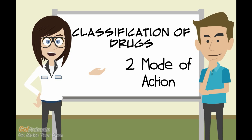The second way of classifying drugs is by their mode of action. There are three types of drug mode of actions: etiological, substitutive, and symptomatic treatment.